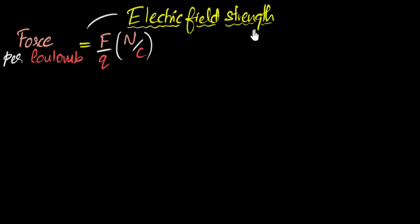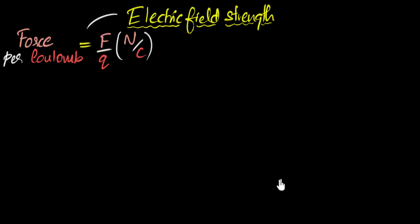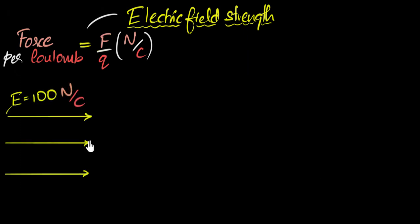We have defined electric field strength as the amount of force acting on a coulomb of charge — force per coulomb, so newtons per coulomb. Now in this video, we will look at a new way of defining electric field strength in terms of potential difference. Let's take an example: imagine we have a uniform electric field towards the right, created by some sheet of charge, and let's say the strength is 100 newtons per coulomb.